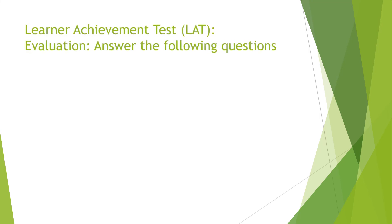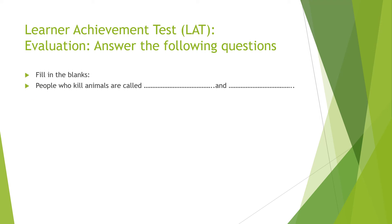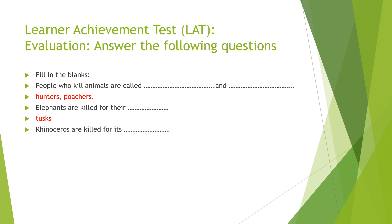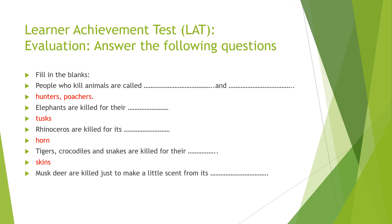Now test yourself by answering the following questions. Fill in the blanks: people who kill animals are called hunters and poachers. Elephants are killed for their tusks. Rhinoceros are killed for their horns. Tigers, crocodiles and snakes are killed for their skins. Musk deer are killed just to make a little scent from their musk.